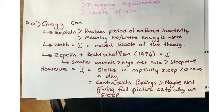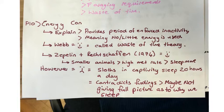The first evolutionary theory is energy conservation, which provides a period of enforced inactivity, meaning little or no energy is spent. Usually it is small animals with high metabolic rates that require this enforced inactivity — Webb labelled this the waste of time theory. Zeppelin and Wright-Schaffern in 1974 found that smaller animals with high metabolic rates need to sleep more, supporting energy conservation. However, counter-evidence exists: sloths in captivity need to sleep 20 hours a day, yet they are very large animals, contradicting the energy conservation theory.